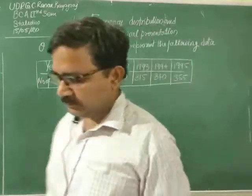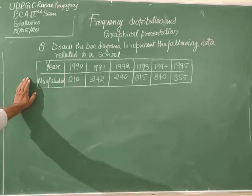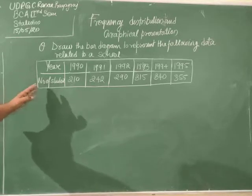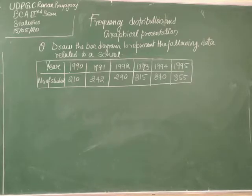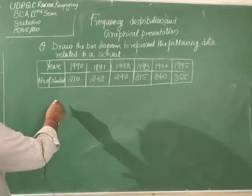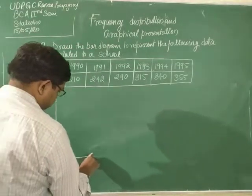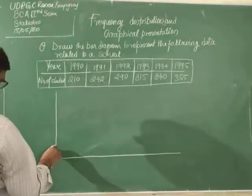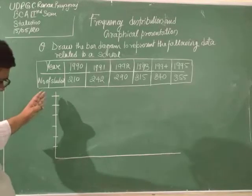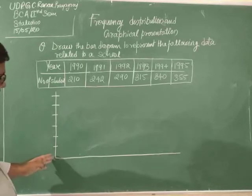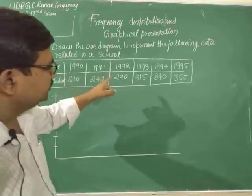Now there is a problem: draw the bar diagram to represent the following data related to a school. Here, the number of students is given. We will draw it in a one-dimensional bar diagram. The minimum number is 210 and the maximum is 355.